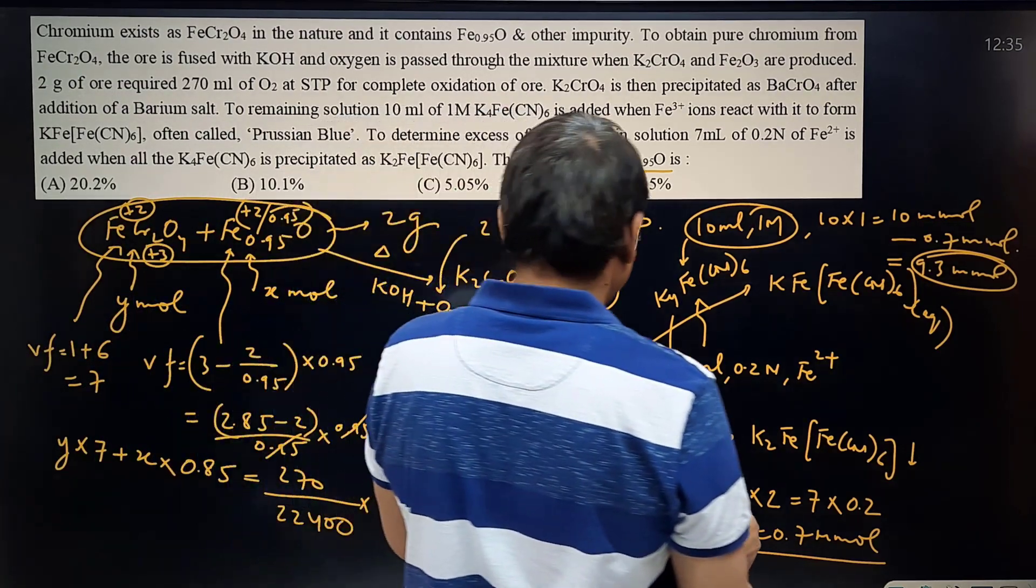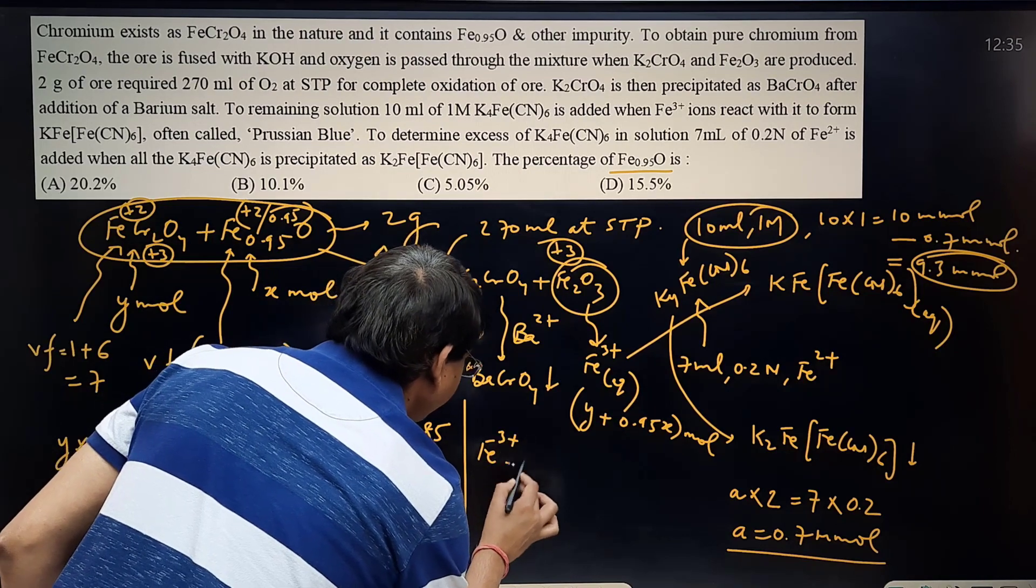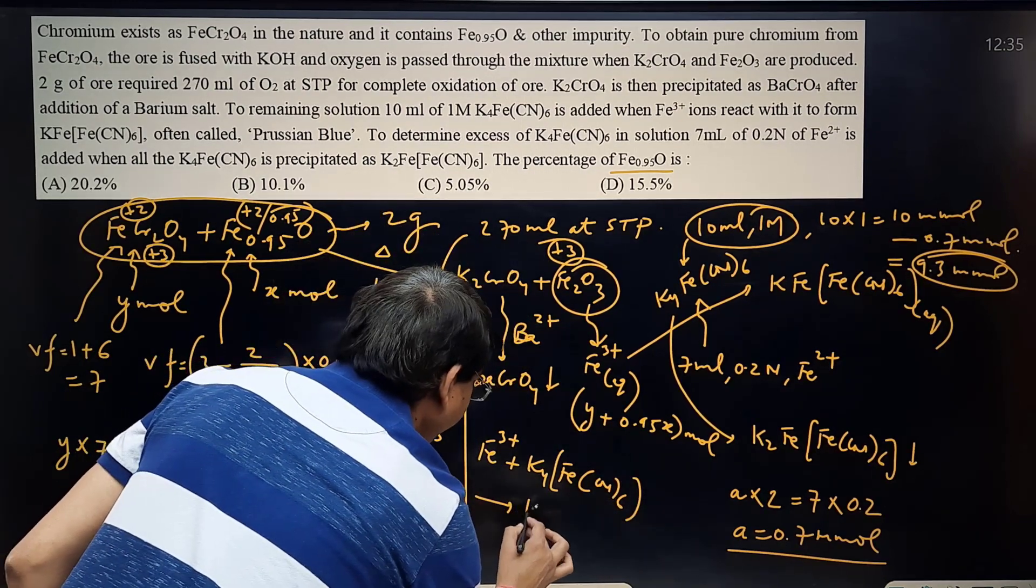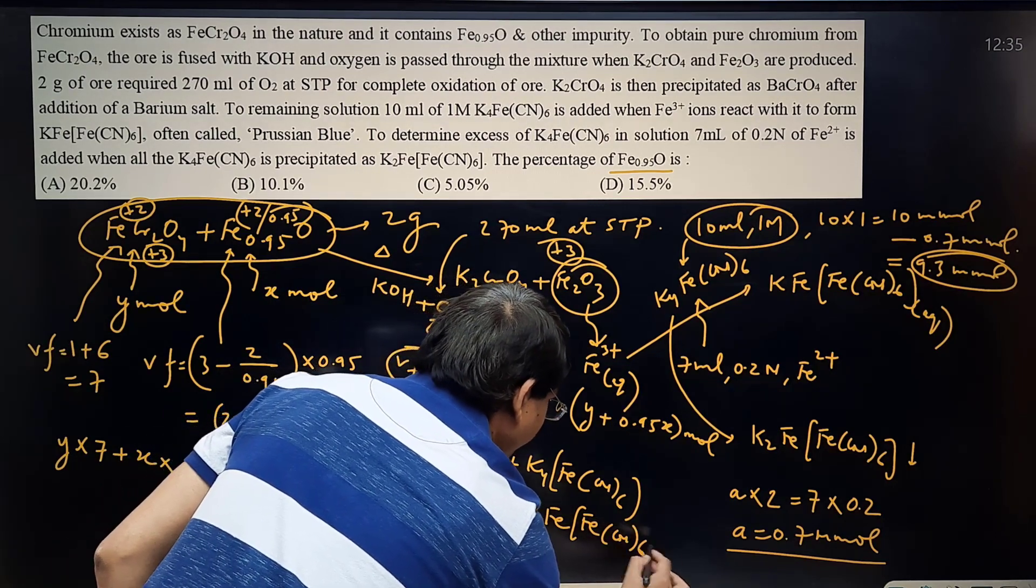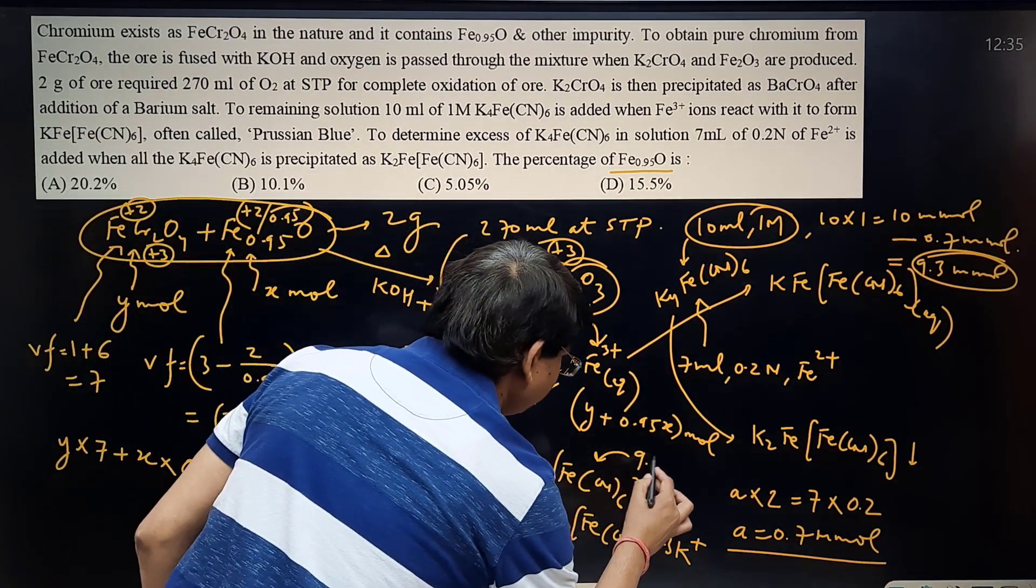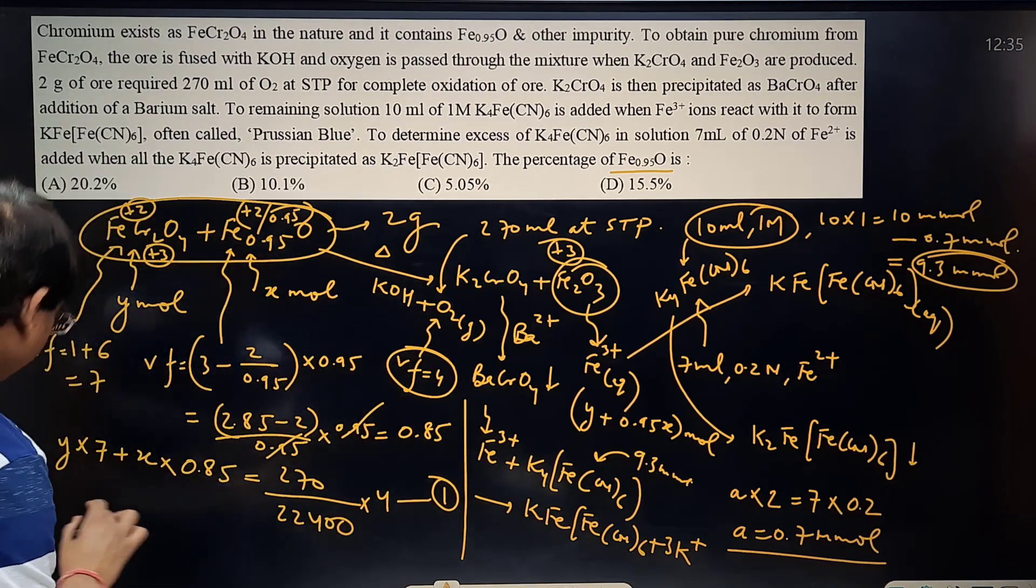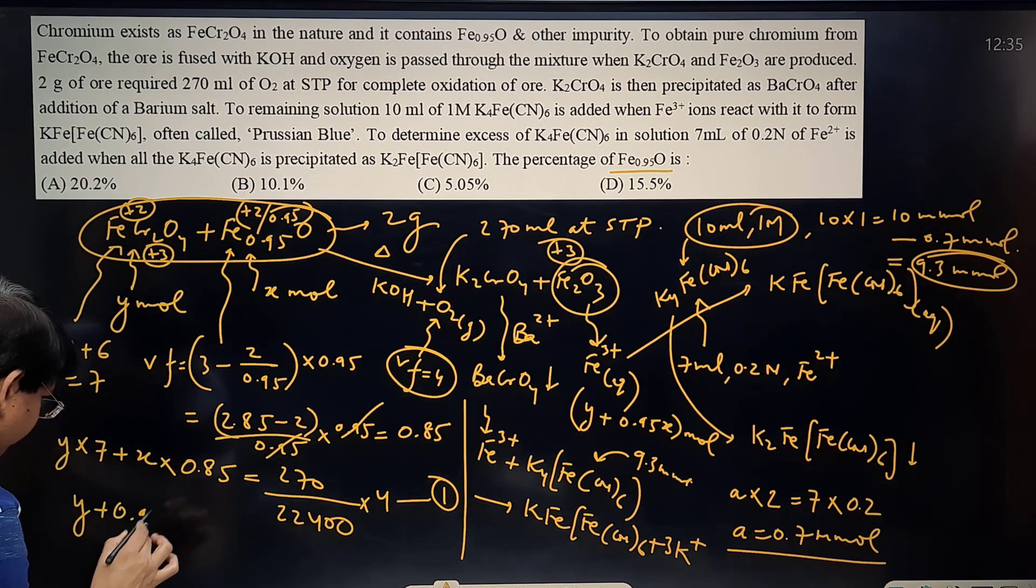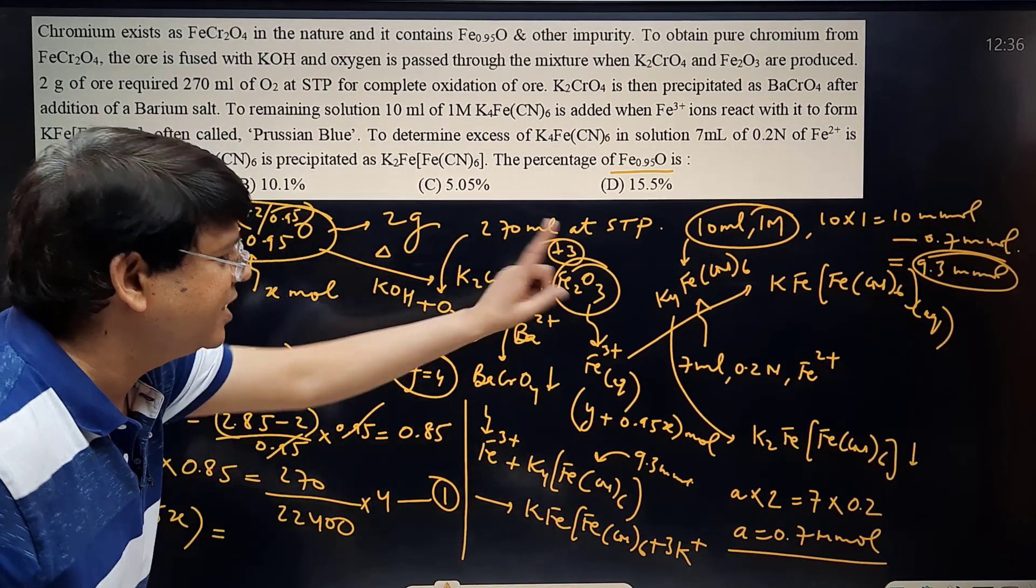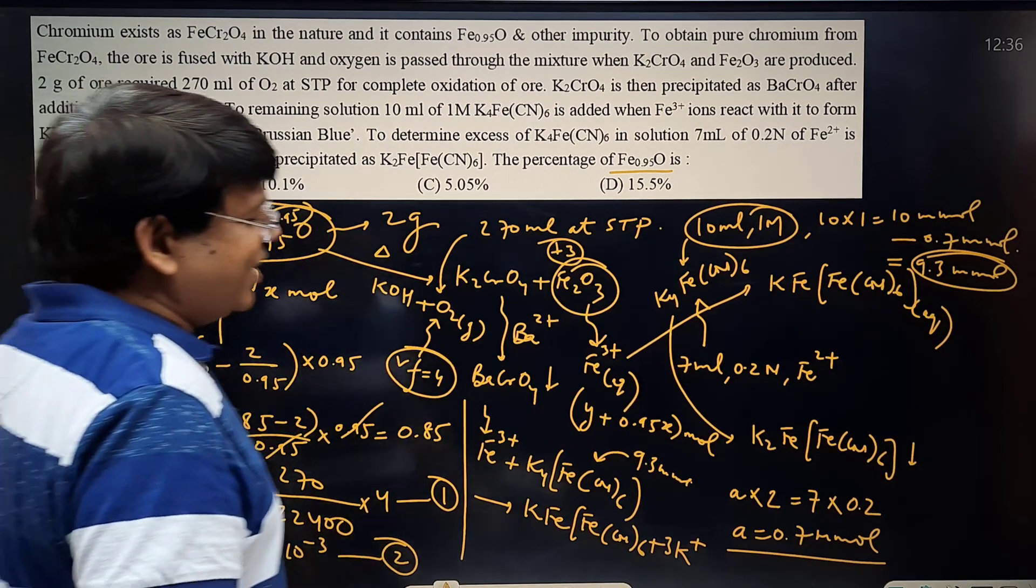Now the question can be solved. One more equation will come. Fe3+ has been converted to KFeFeCN6. The reaction is Fe3+ combining with K4FeCN6 forming KFeFeCN6 plus 3K+. How many millimoles have been used up in the main reaction? 9.3 millimoles. So how much iron should be there? Equal, 1 is to 1 ratio. So another equation we got: Y plus 0.95X, these are moles, should be equal to 9.3 times 10 to the power minus 3 mole. This is equation number 2.